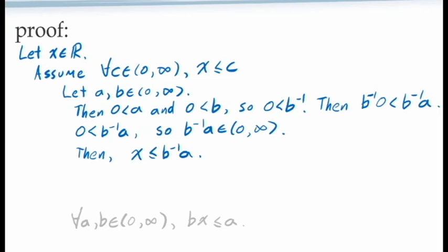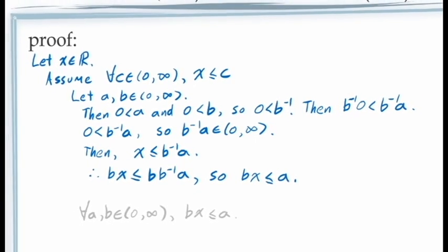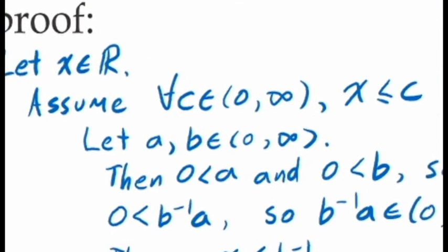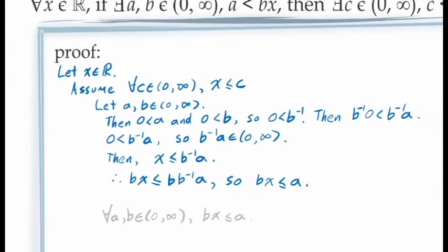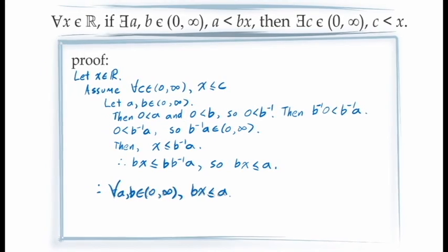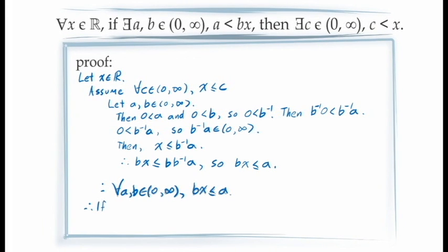Keeping in mind that we're trying to demonstrate b times x is less than or equal to a, we can take our inequality x is less than or equal to a times b inverse and, since b is greater than 0, multiply on both sides by b. This gives us b times x is less than or equal to a, which is exactly what we're trying to demonstrate. Piecing the conclusions together, since this demonstration has been done for arbitrary constants a and b in the interval from 0 to infinity, we can conclude that b times x is less than or equal to a holds for all values of a and b in that interval. Since all of that was done under our assumption, the principle of conditional proof allows us to conclude that if our assumption holds, then our conclusion holds.